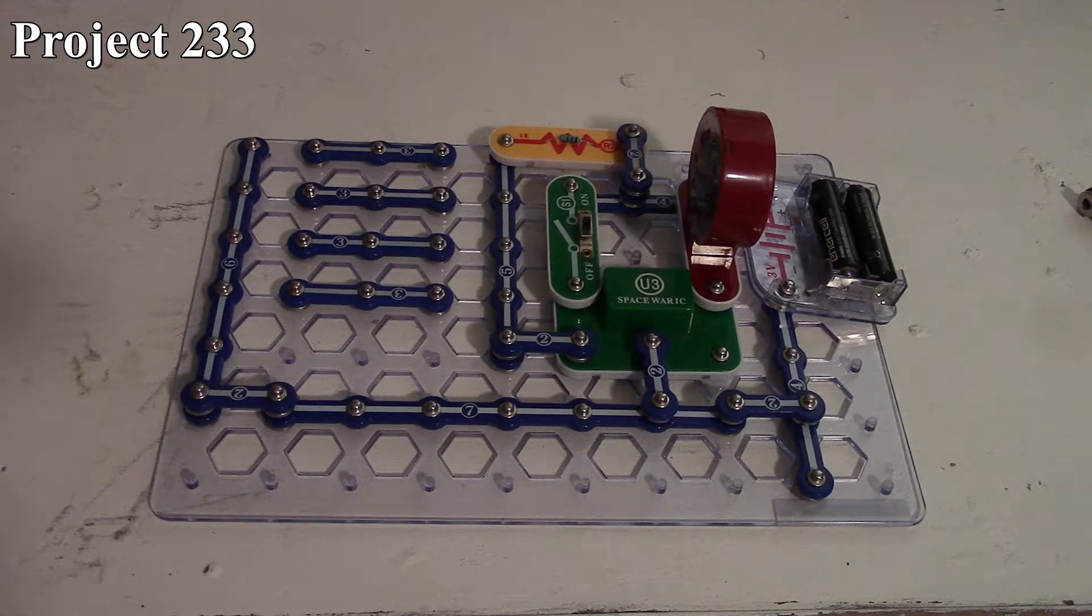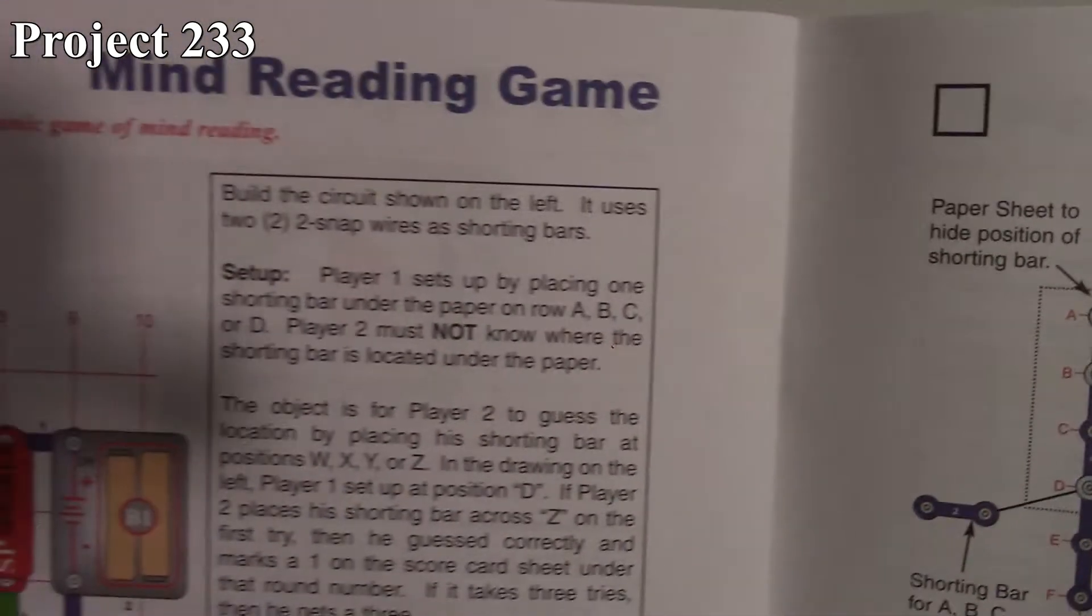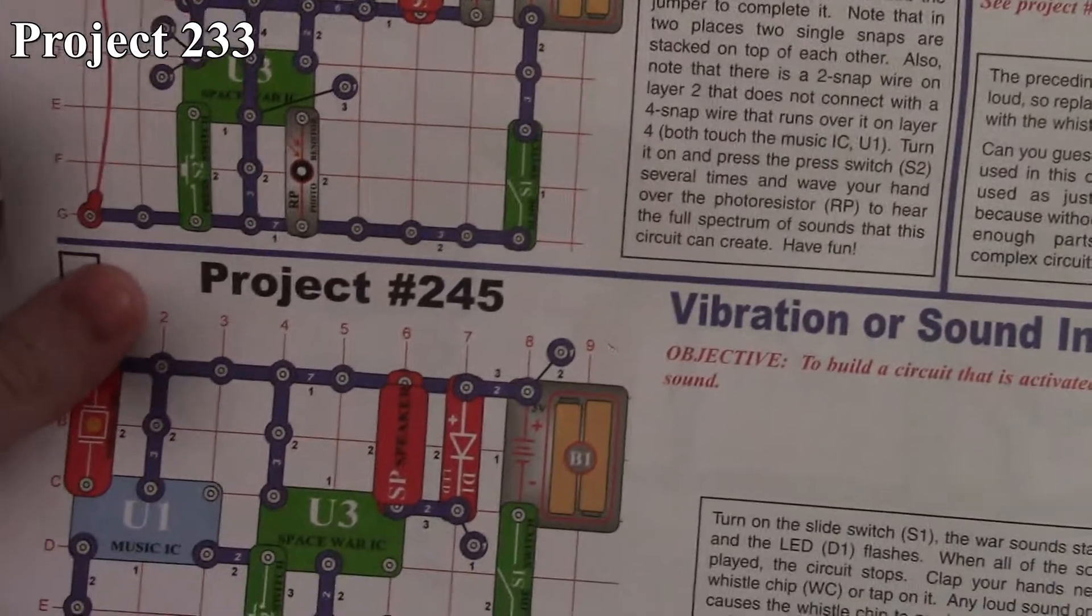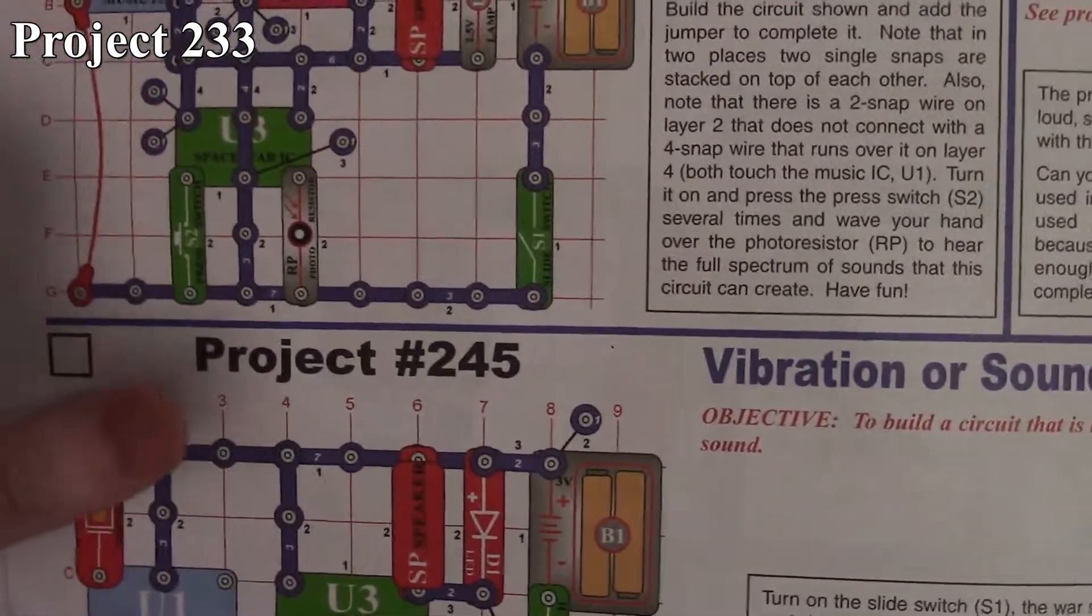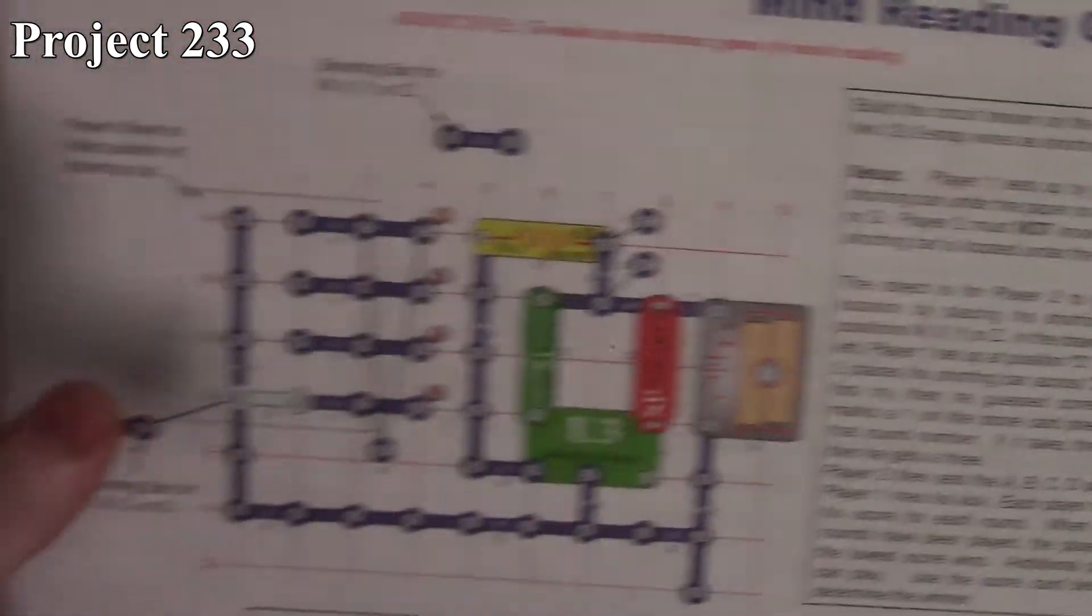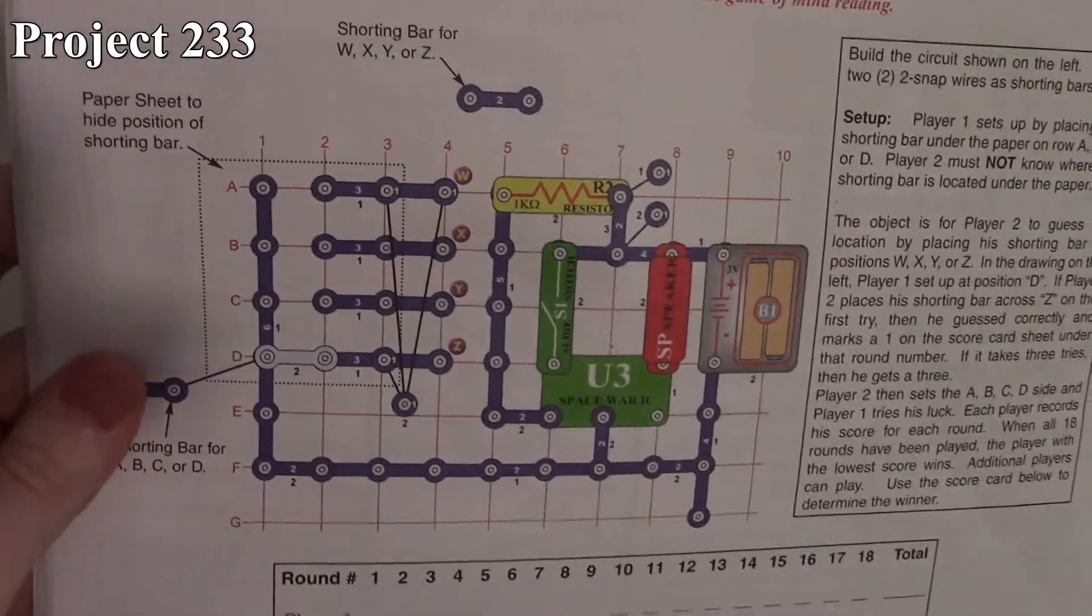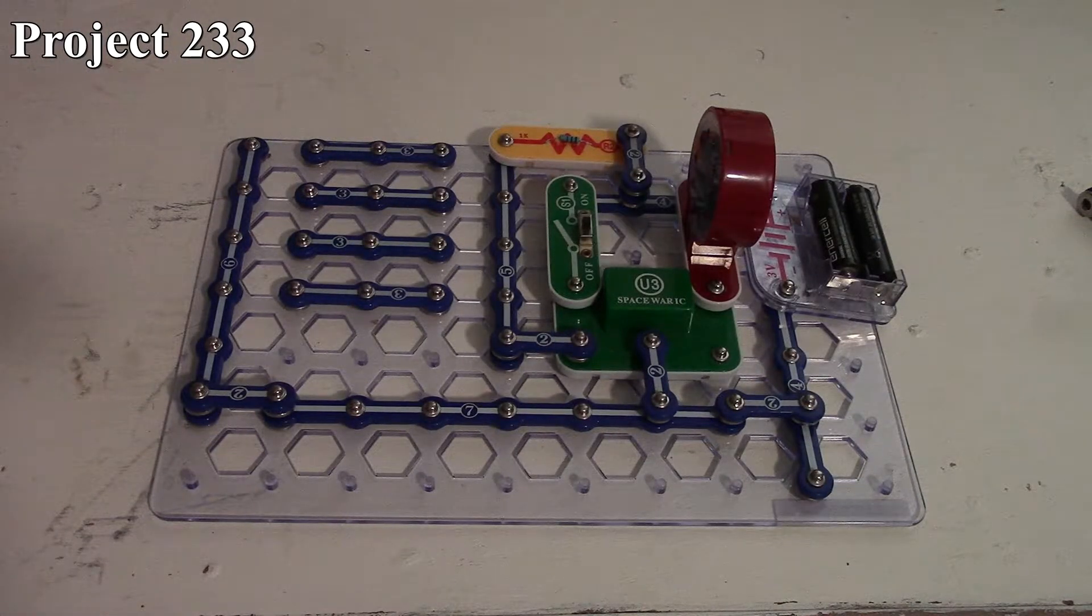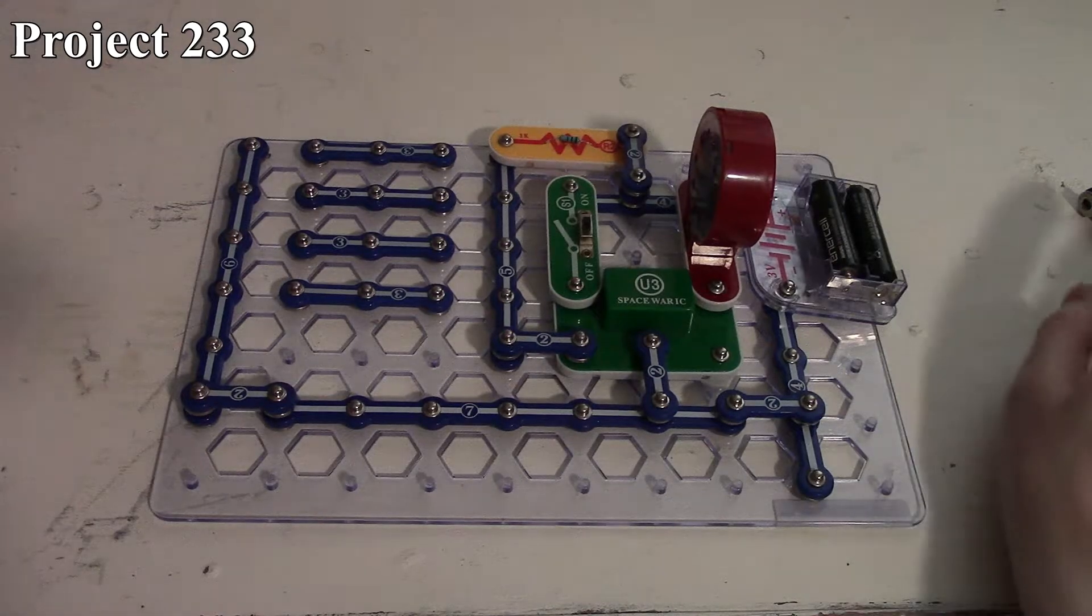In this series of Snap Circuits videos, we're looking at projects 233 through 245, starting with the mind reading game and going all the way to the vibration or sound indicator. Here's what the mind reading game looks like in the book, along with our scoreboard, and there it is on the board.